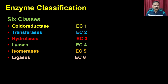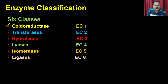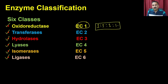We have classified enzymes into 6 different groups: oxidoreductases, transferases, hydrolases, lyases, isomerases, and ligases. All these classes are given their respective enzyme commission number or EC number. The EC number is one way of giving nomenclature to enzymes. For example, EC 1.1.1.1 corresponds to the enzyme called lactate dehydrogenase.